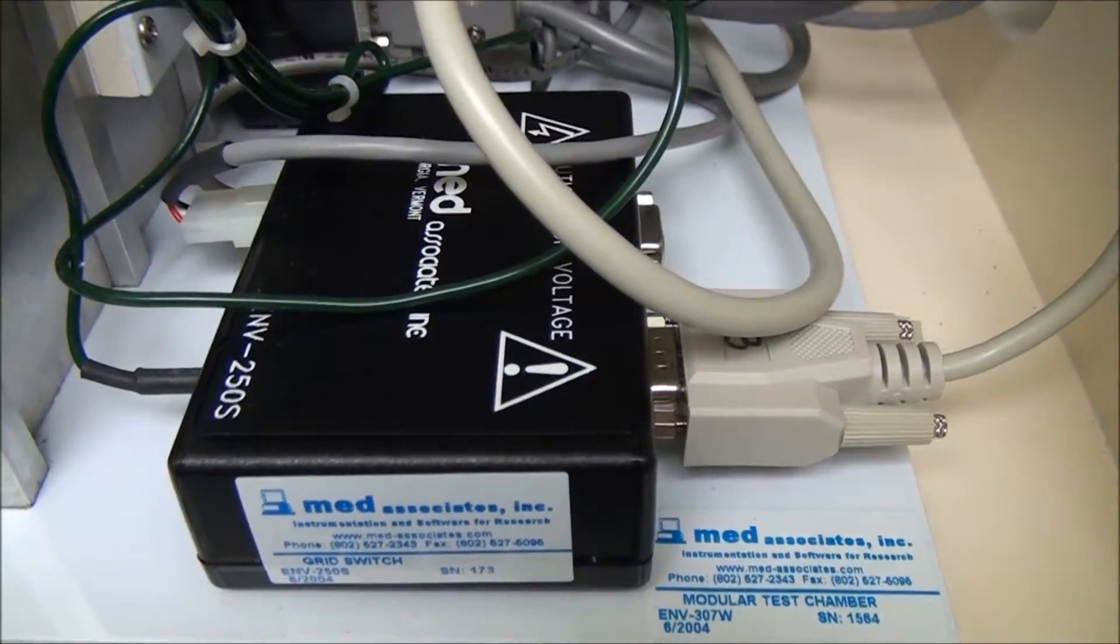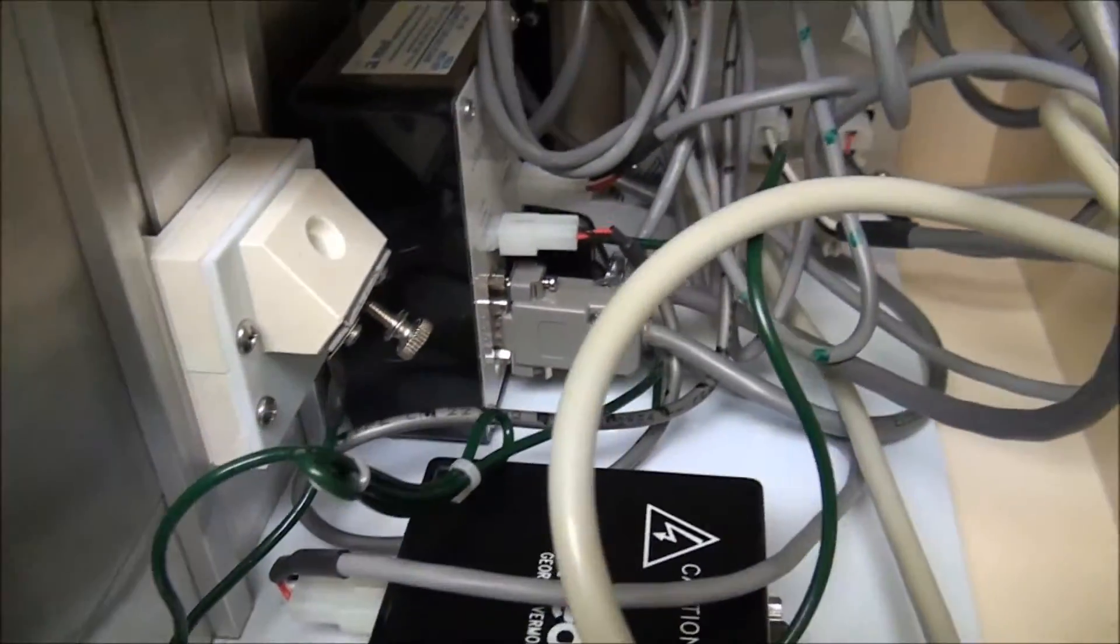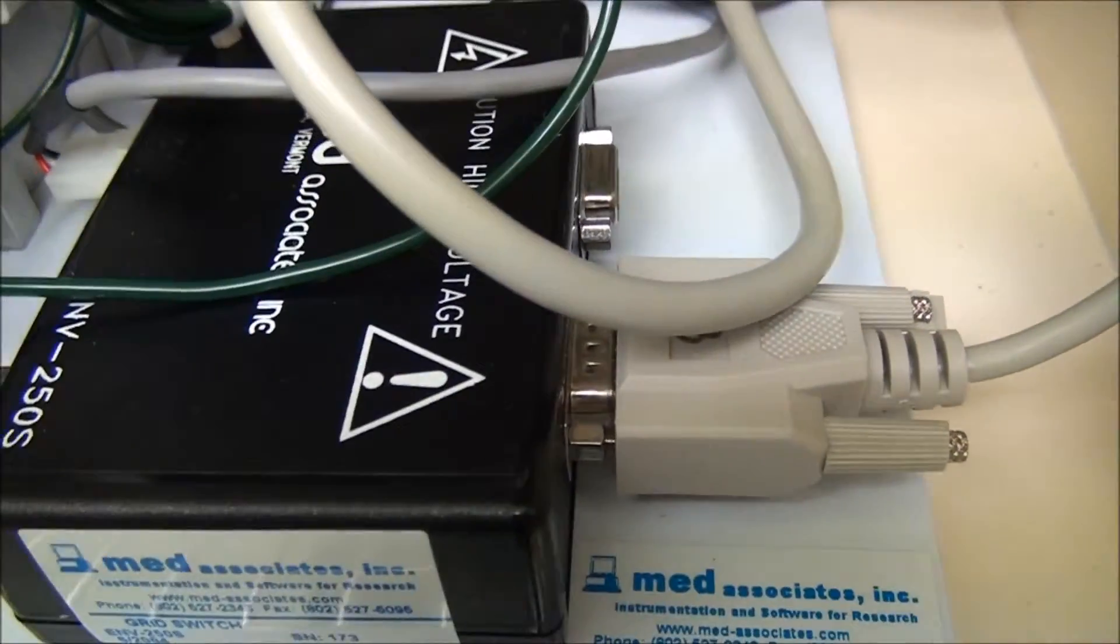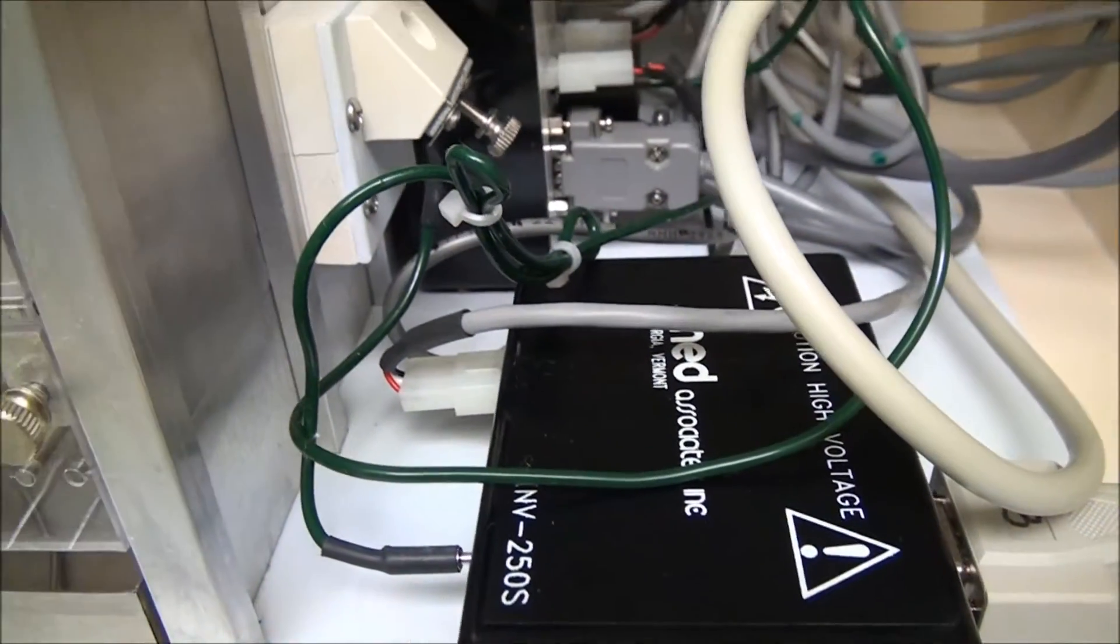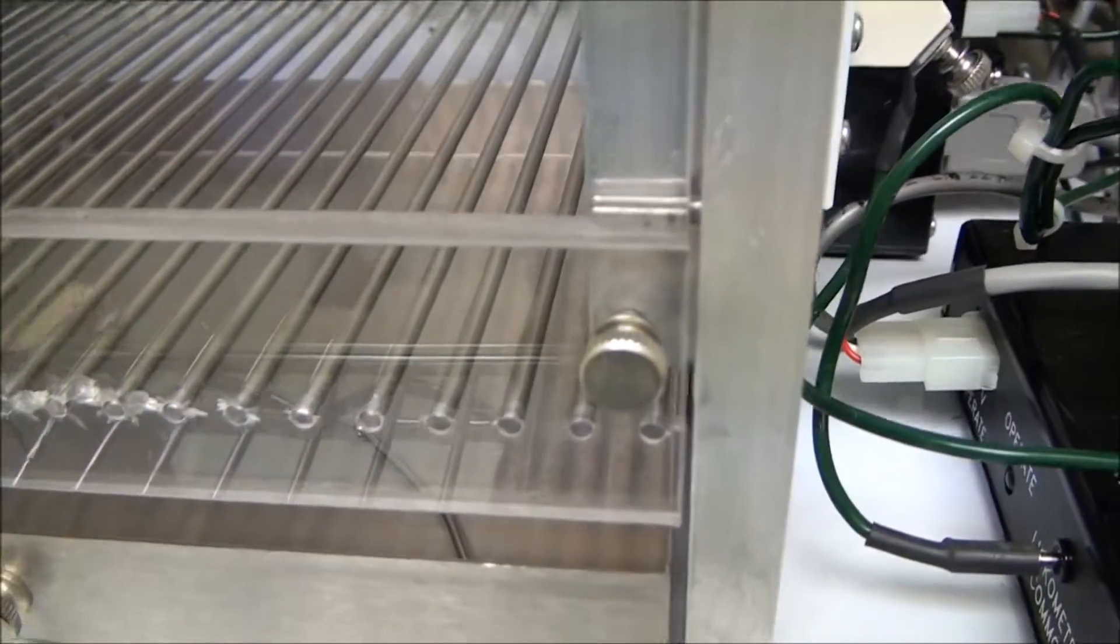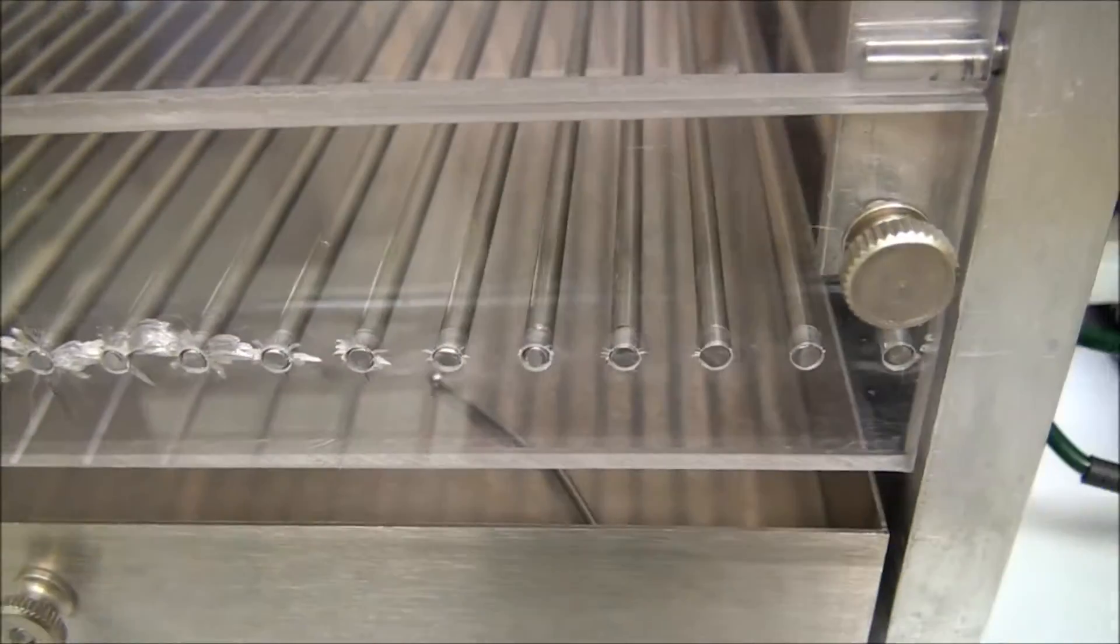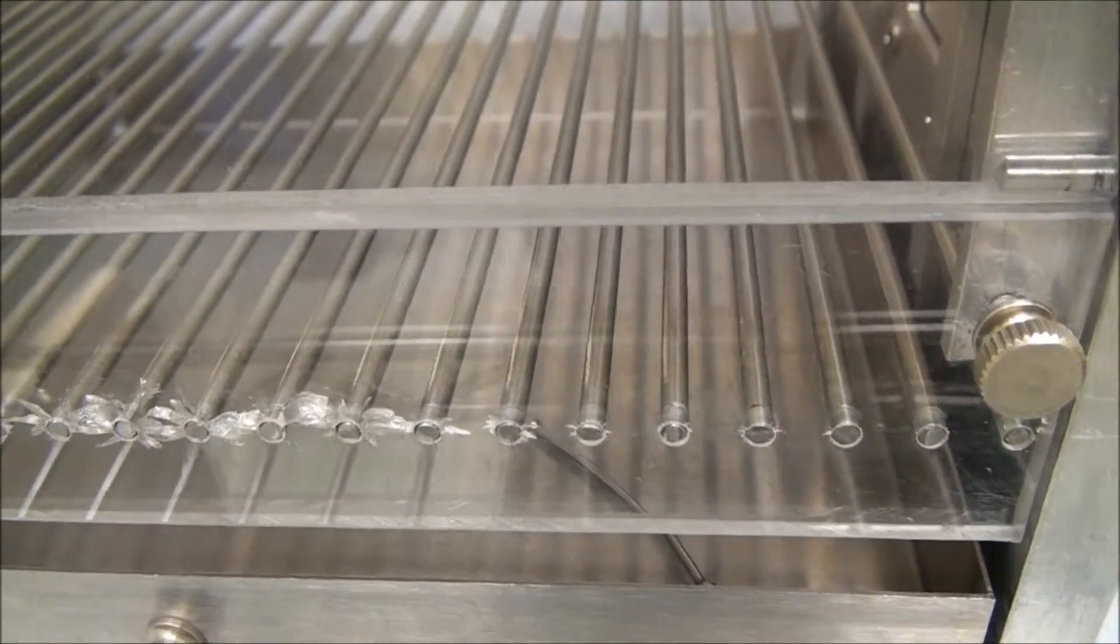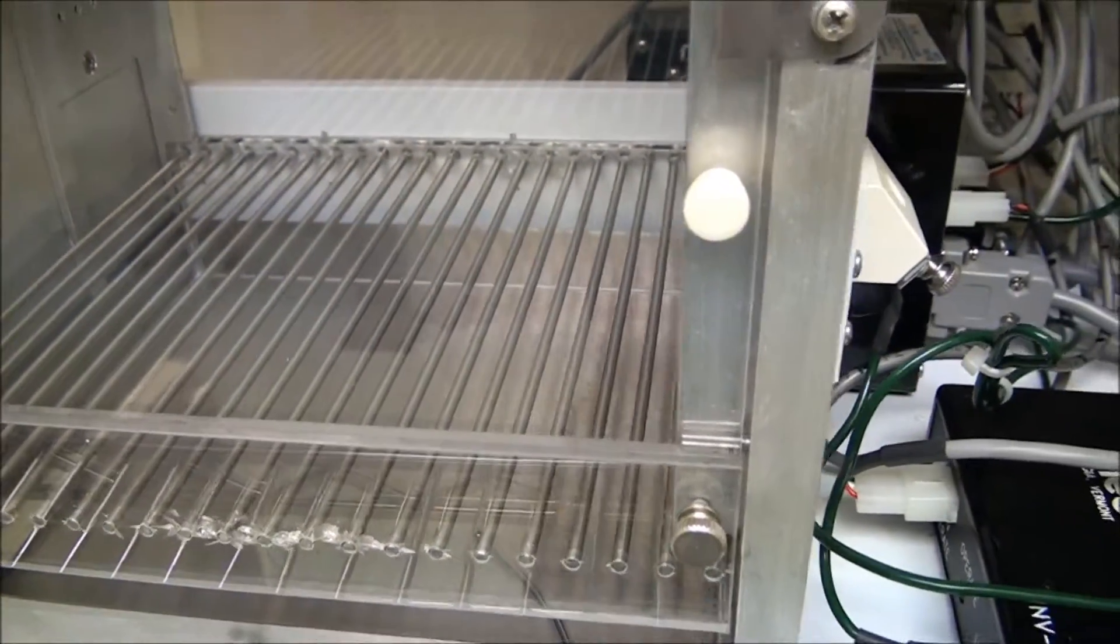And then the other module over here is a bit different. It's actually a module that you would have to unhook the Licometer module that we just showed you and then rewire it for this. And this module is a Scrambler grid module where it takes each individual grid on the deck here. And you can program it to shock any of these rods on this grid. And then that's why they call it the Scrambler.